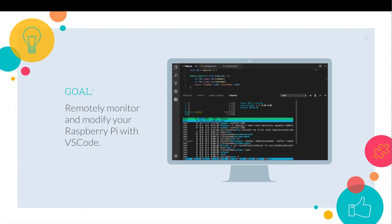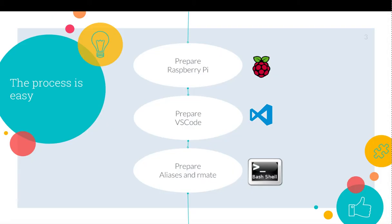Let's go ahead and look further. This is easy and fun. All we need to do is to prepare a Raspberry Pi, prepare some VS Code, and prepare some aliases in a program called rmate. Let's do it.